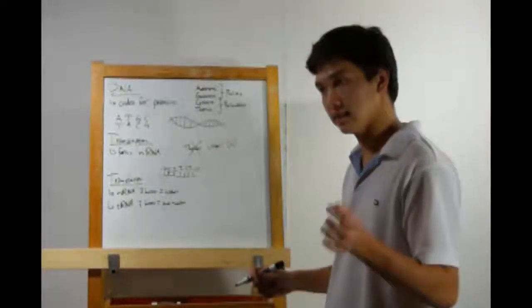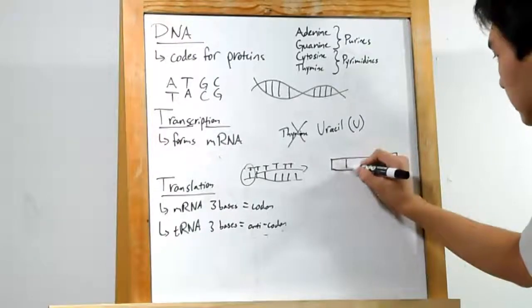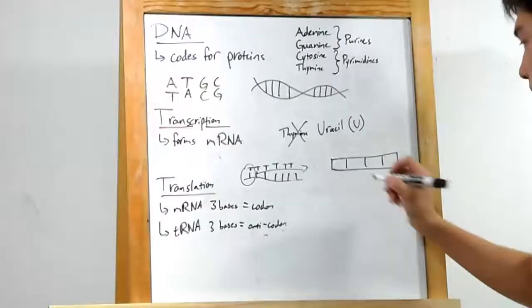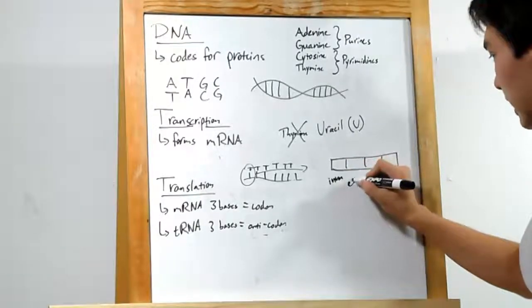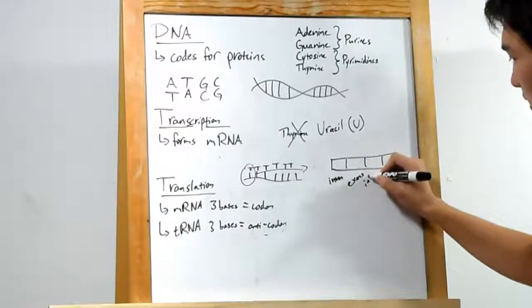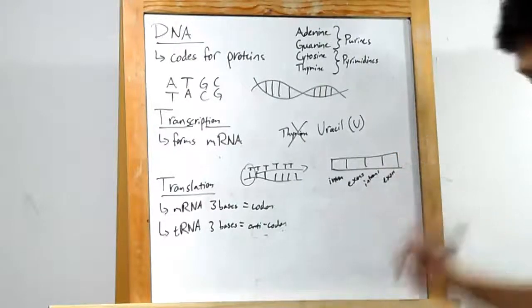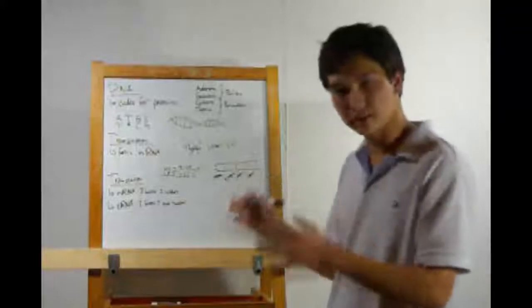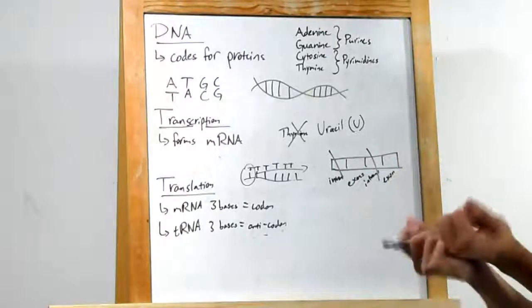But we're not done yet. See, the RNA strand that we've created has different types of parts. It's got introns, and it's got exons. The thing about this is that we want just the exons. We don't want the introns at all. And so what will happen is the introns will be cut off, and the exons stuck back together.